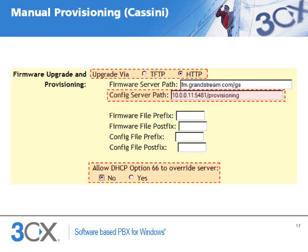If you do not want to or cannot use DHCP option 66, you will need to manually tell the phone where to retrieve its configuration files. In the case of a Grandstream GXP2000, for example, we need to simply give it a URL path to retrieve files from, and also tell it to ignore any DHCP server's attempts to override this setting. Load up the phone's web interface, go to the Advanced Settings tab, select the Upgrade via HTTP option, and in the Config Server Path field, enter the provisioning path.